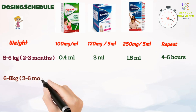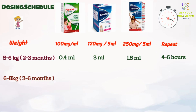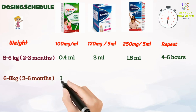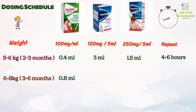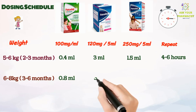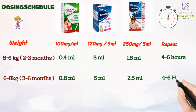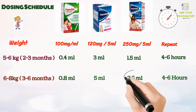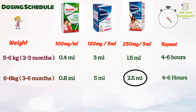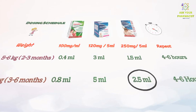Similarly, if the child's weight is 6 to 8 kg, which is around 3 to 6 months, the dose for drops will be 0.8 ml. If using 120 mg per 5 ml syrup, then the dose will be 5 ml. And for 250 mg per 5 ml syrup, the dose would be 2.5 ml. We already told you how to calculate the dose, but let's see how this 2.5 ml dose was derived.